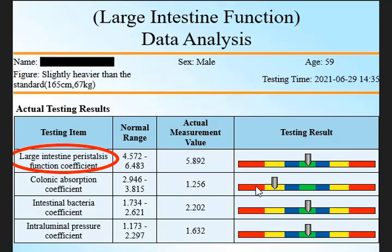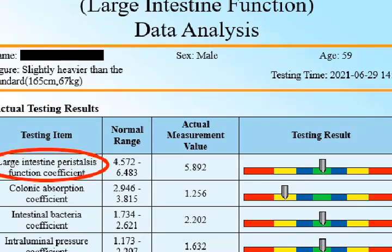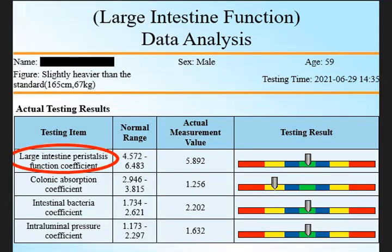What this is saying is that the colon is not absorbing water as it ought to. If it were absorbing water properly, it should read normal or even high. But if it is not absorbing water and reads moderately abnormal low, the person is going to express a watery stool — that is what we call diarrhea. In summary, to detect diarrhea in your curable device, check the colonic absorption coefficient under large intestine function data analysis for a moderately or severely abnormal low reading.